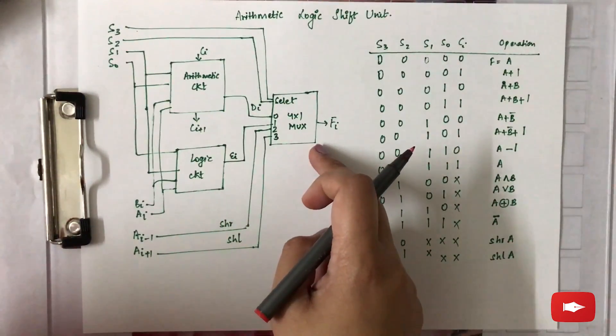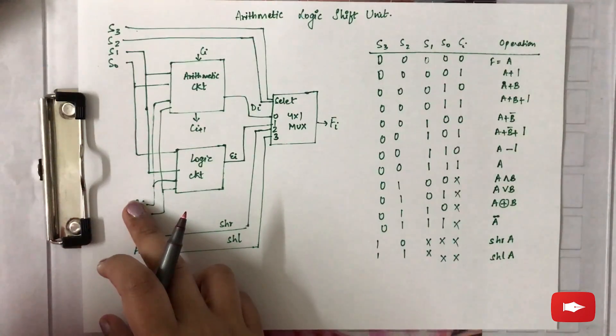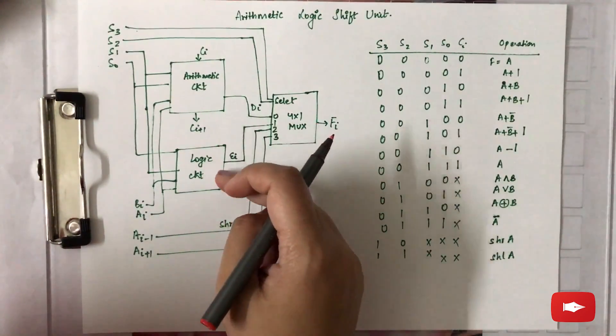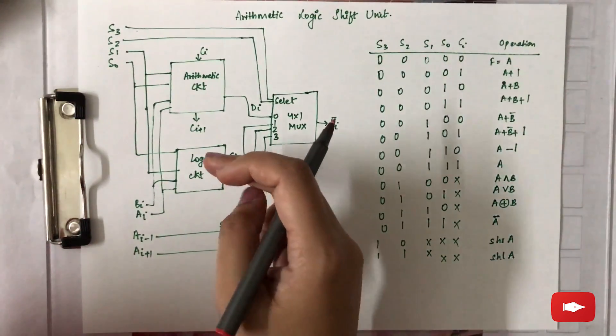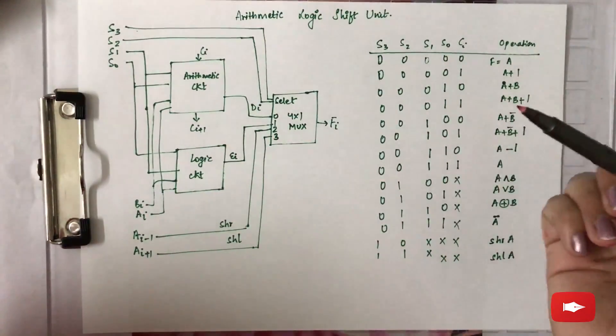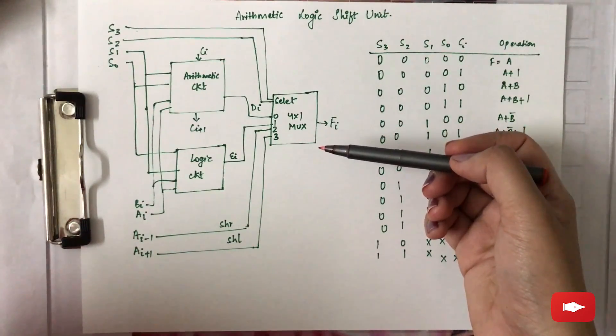A multiplexer. Now there are two inputs ai and bi which are sent as input to both arithmetic circuit and the logic circuit. There are two select lines s0 and s1 which are used to select which one of them will work: arithmetic or the logic circuit.